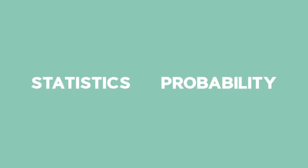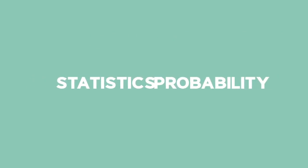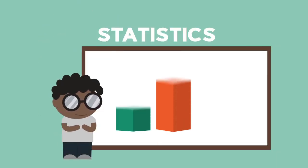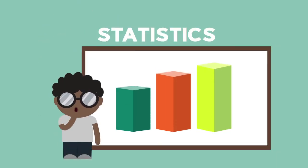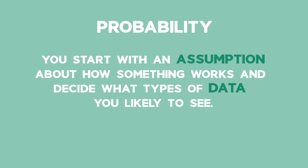Statistics and probability are two closely related topics. With statistics you start with observed data and then make conclusions on how something works. In probability you start with an assumption about how something works and then decide what types of data you're likely to see.